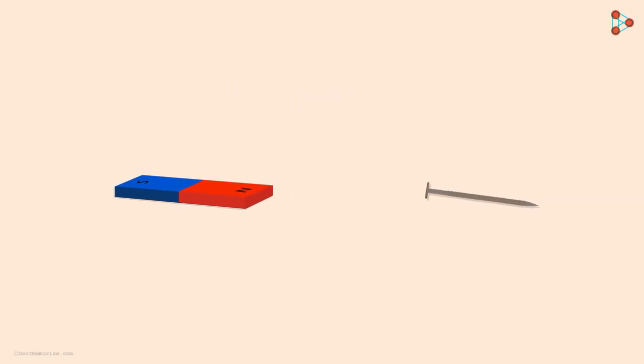What happens if we bring it near an iron nail? We know that as we bring it closer to the nail, at some point the nail moves towards the magnet and sticks to it. Moreover, it remains there until we manually separate it from the magnet. So why does an iron nail stick to the magnet?